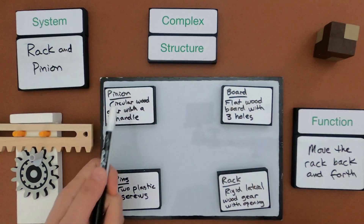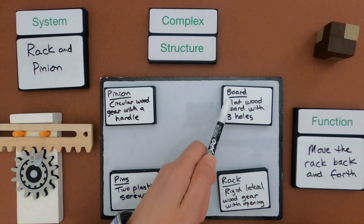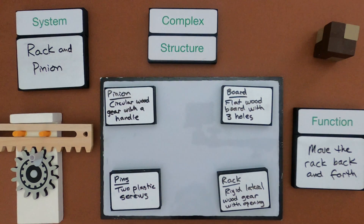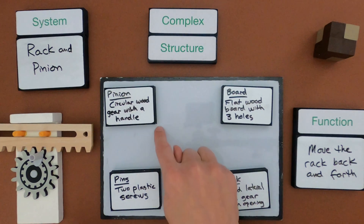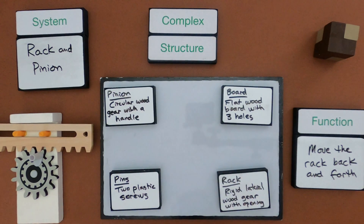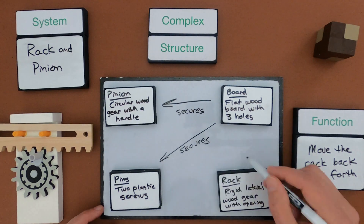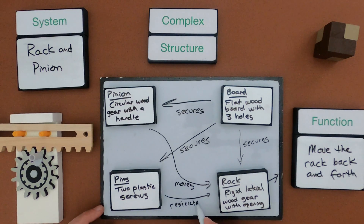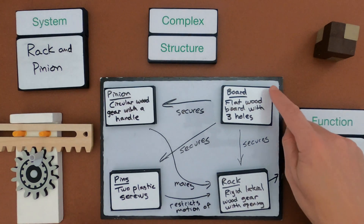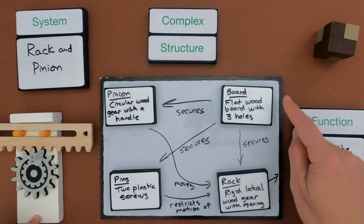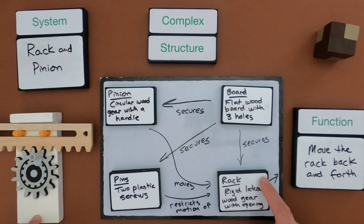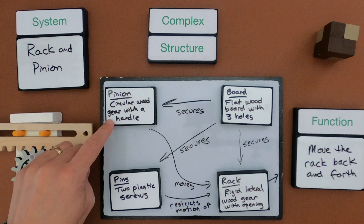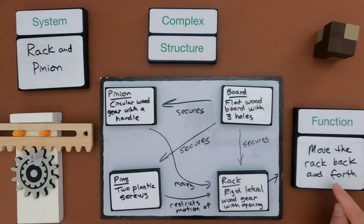Now I have a way to show how these are all interacting — how the pinion is connected to the board, connected to the rack. If this is a structure and this is a structure, what is the connection between the two? The board's main role is to secure both the pinion, the pins, and the rack — it holds them in place. When I turn the pinion that moves the rack back and forth. These arrows are really showing cause: when I move this it's causing that to move.